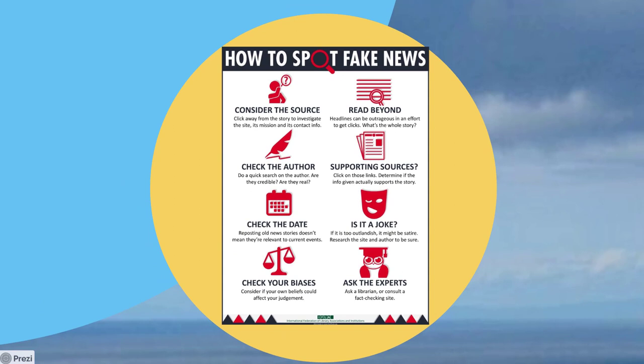Finally, spot fake news — consider the source: where is it from and who is it from? Read beyond the headline to see if it's the whole story. Do your due diligence and look at other resources. Check whether the author is legitimate, and look for links to supporting sources — are they legitimate sources? Check the date: is it current or old? Is it a joke? There's a lot of satire out there that people take as real and post on Facebook. Check your biases — are you only looking at websites that are extremely biased toward your side? Look at other perspectives, and ask the experts: a librarian, your professor, or a fact-checking site.